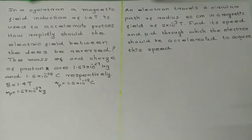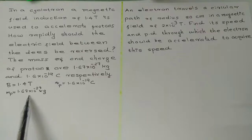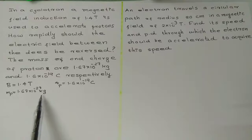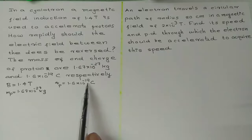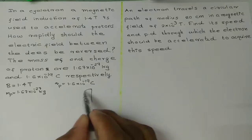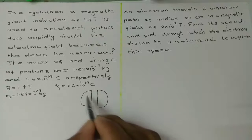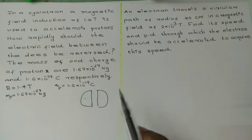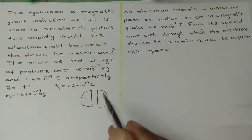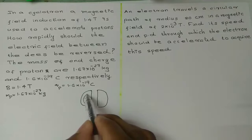Given: B = 1.4 tesla, mass of proton = 1.67×10⁻²⁷ kg, charge of proton = 1.6×10⁻¹⁹ coulomb. In a cyclotron there are two dees (D-shaped structures).